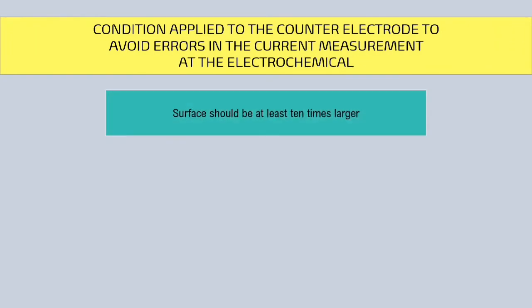Firstly, the surface area of the counter-electrode should be at least 10 times that of the working electrode. The goal is to investigate the half-reaction at the working electrode.